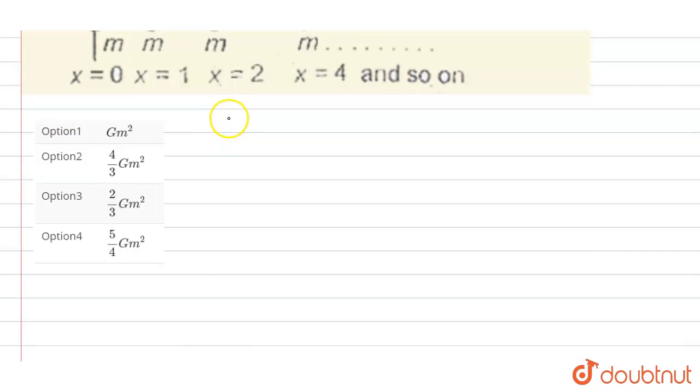So we will write here F equals capital G times m1 times m2 divided by r squared, where r is the distance between the two point masses, and m1 is the mass of one point mass and m2 is the mass of second point mass. So in this case, m1 equals m2.